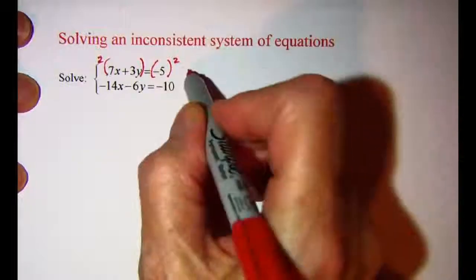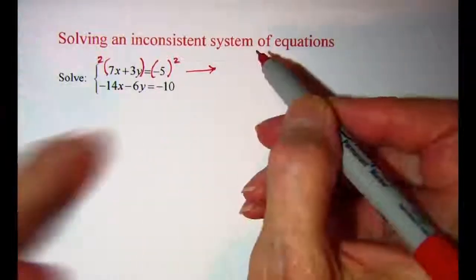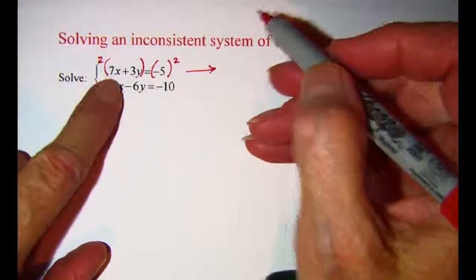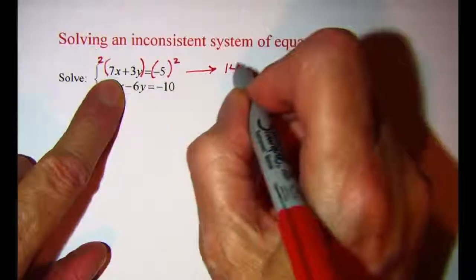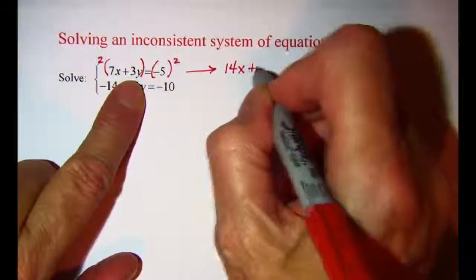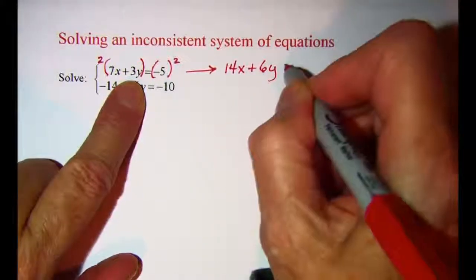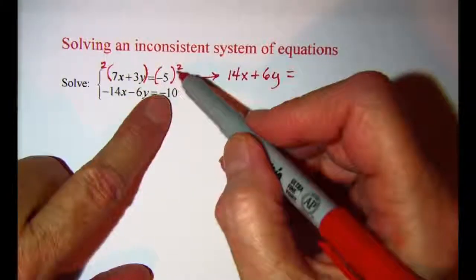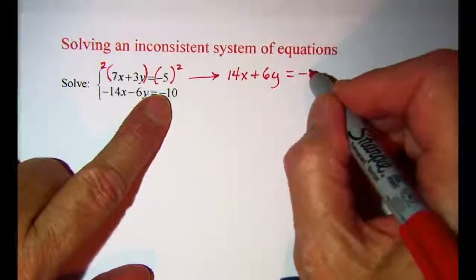So let me rewrite this equation. This will be 2 times 7x is 14x, and then 2 times 3y is 6y, and on the right side I have 2 times negative 5 is negative 10.